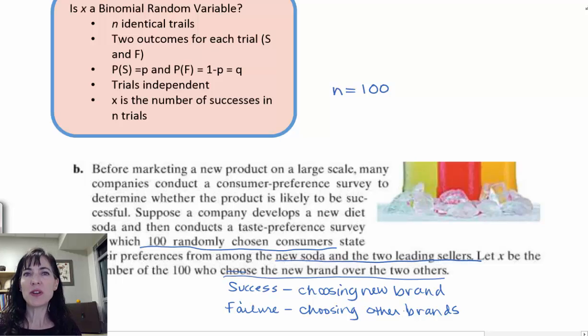So that's how you get around it. There are three things that you're testing, but we want it to be binomial. Either they chose the new brand or they didn't. And that's how you can make it binomial. So yes, there are two outcomes. Success is choosing the new brand; failure is not choosing the new brand.